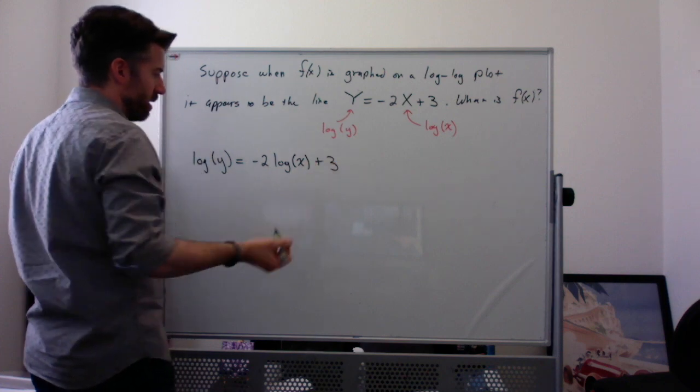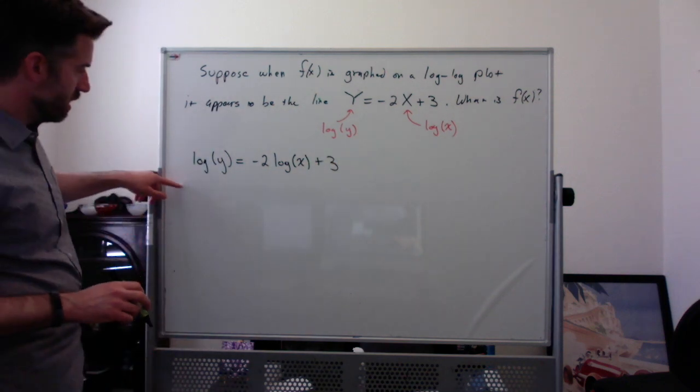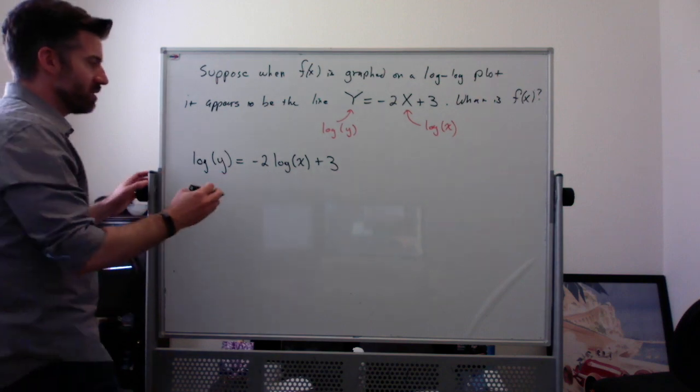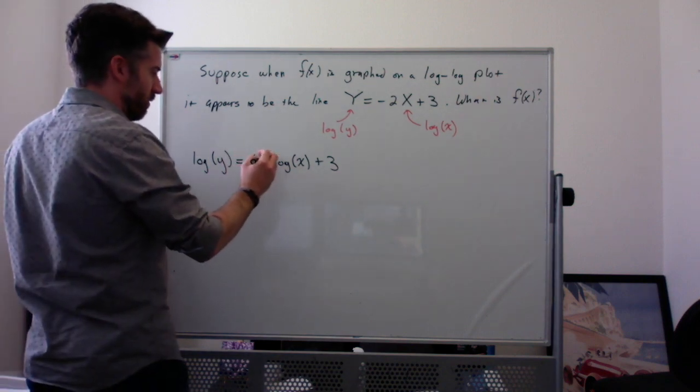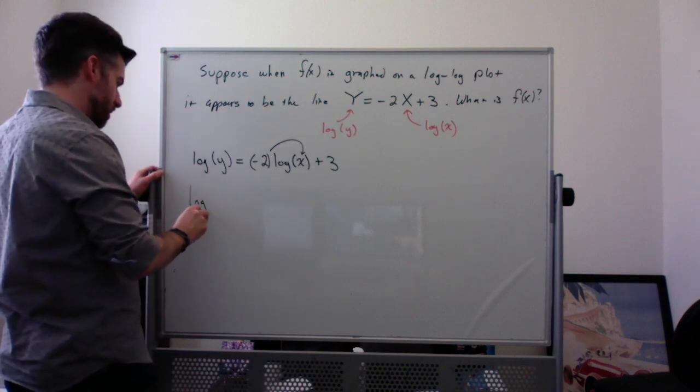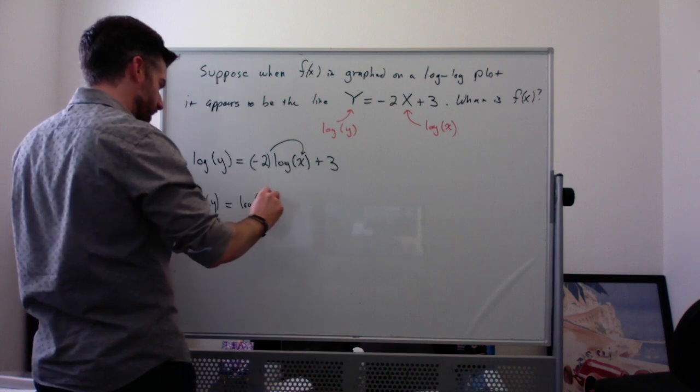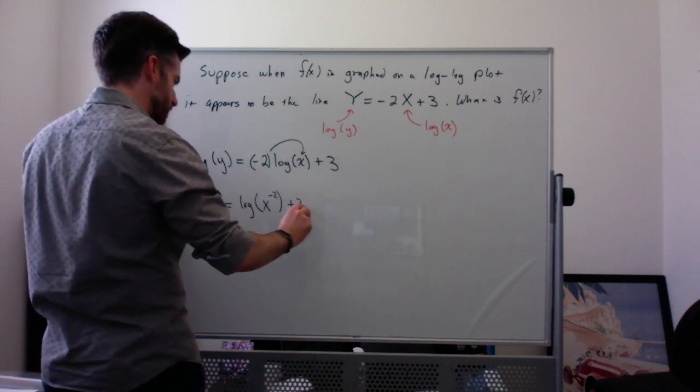To be honest, although I'm going to do 10 to the power of each thing, it's going to be easier if I write this -2 as the power of x. So I really want to write this as log(y) = log(x^-2) + 3. You can do that stuff after you write both sides as powers of 10; it doesn't really matter.